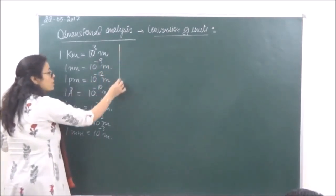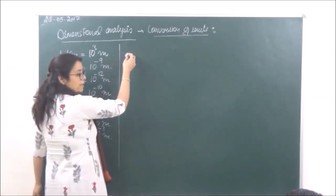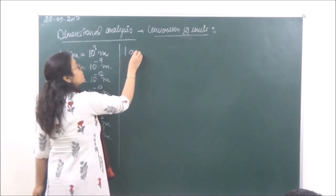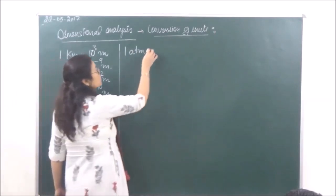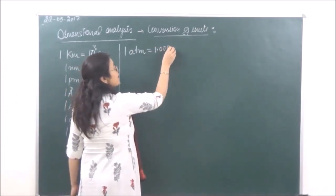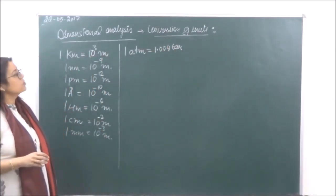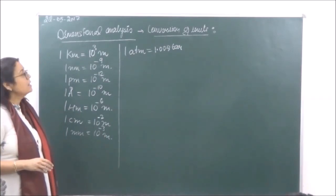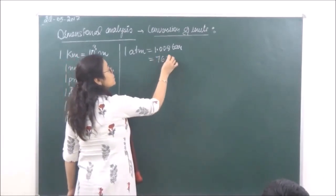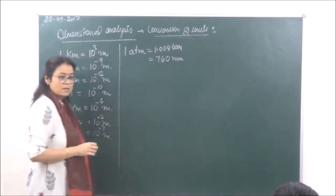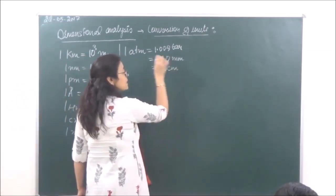Similarly, we have more conversion factors. For example, for pressure conversion factors. We are taking one atmosphere. One atmosphere that is equal to 1.008 bar. Also, one atmosphere that is equal to 760 mm of mercury.